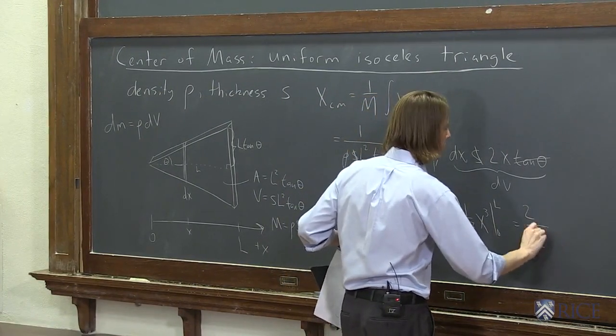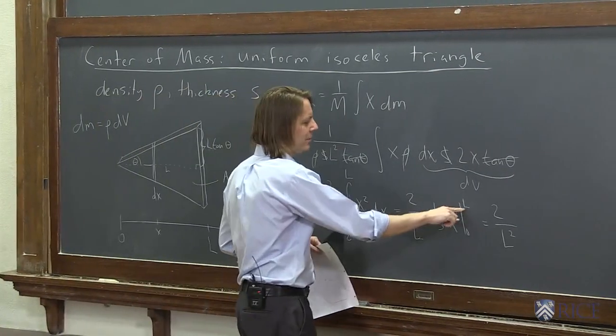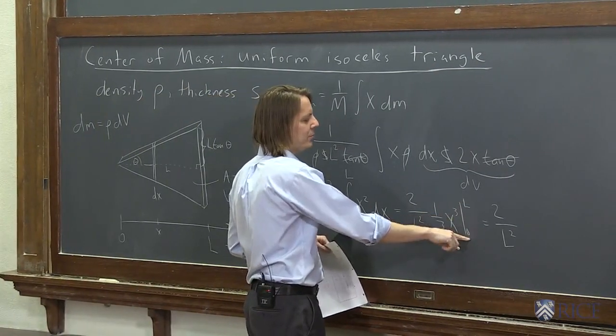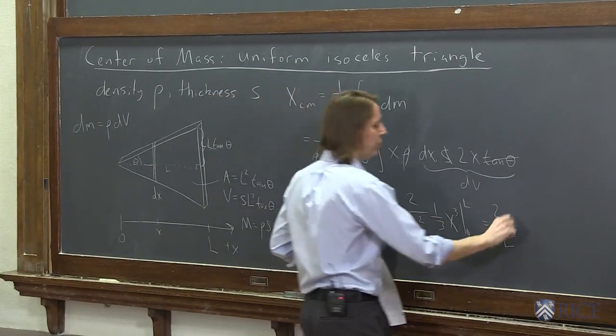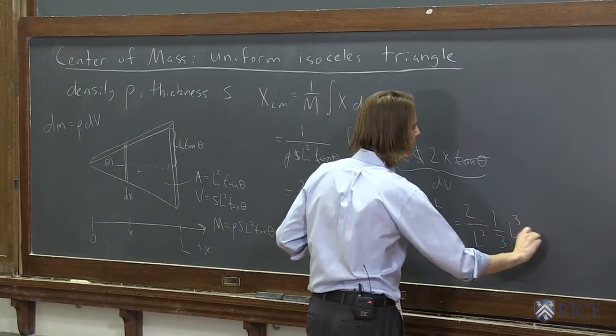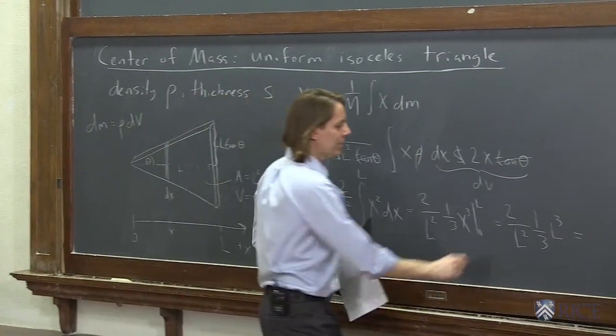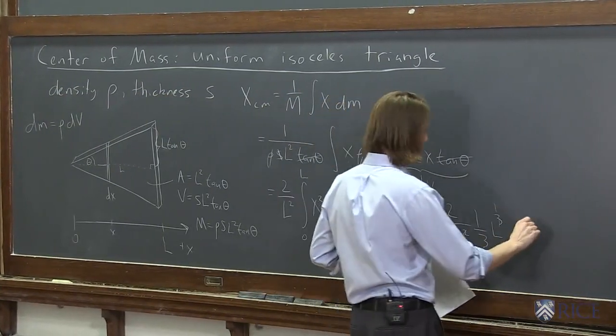So 2 over L squared. And then what do we got here? We're going to plug in this and get L cubed. Minus when we plug in 0, we get 0. So 1 third. And that is L cubed. Bunch of L's cancel. This goes away. That becomes 1. And we get 2 thirds L.